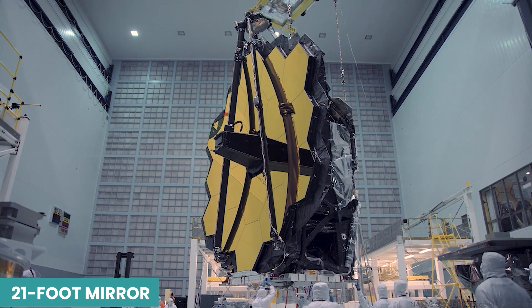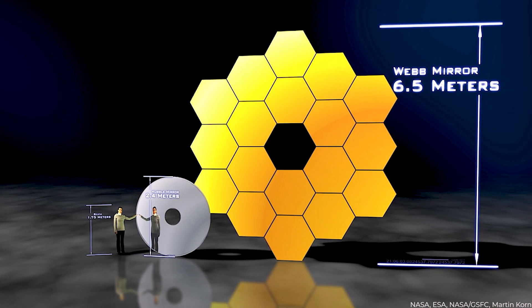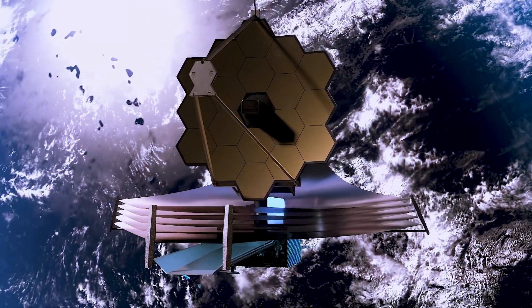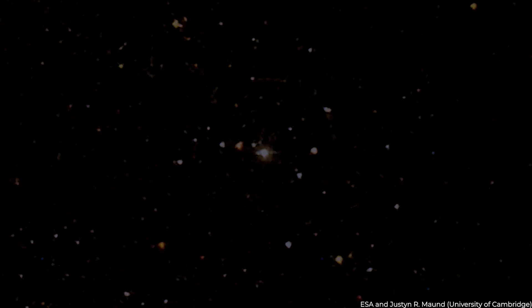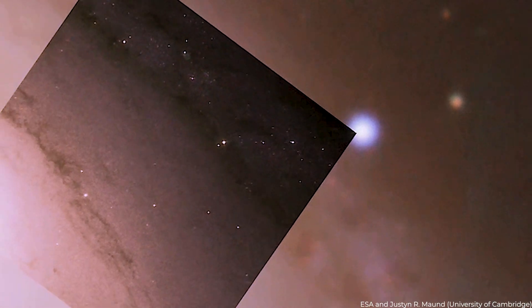Webb's mirror collects light and is more than 21 feet wide. That's more than two times the size of the Hubble Space Telescope's mirror. Webb can view more distant, older things by capturing more light. The telescope is looking at stars and galaxies created nearly a billion years ago, only a few hundred million years after the Big Bang.